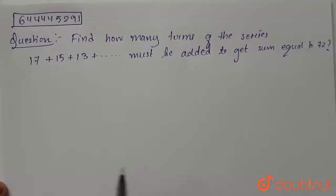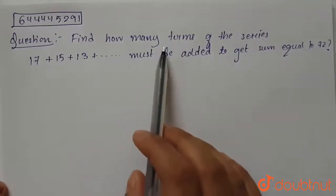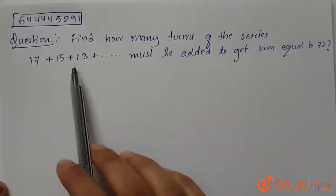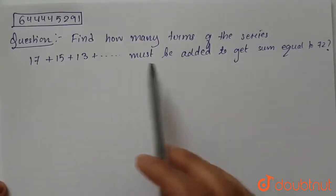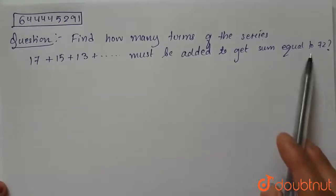Hello everyone, so today our question is: find how many terms of the series 17 + 15 + 13 + ... must be added to get the sum equal to 72.